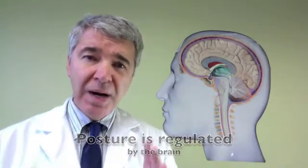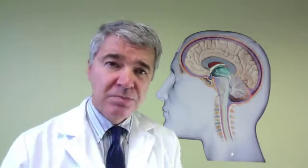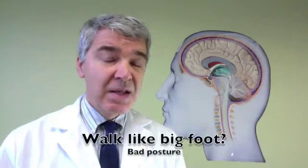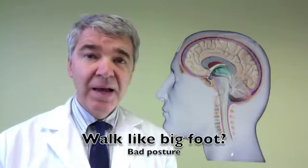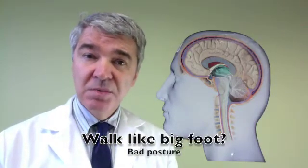So posture, if your posture is bad, your shoulders are rounded, your head is drooping, or your arms are turned out, or if you walk like Bigfoot, there's something wrong with your posture. And that's something that needs to be addressed. It's a sign of a bad brain. Bad posture equals bad brain.